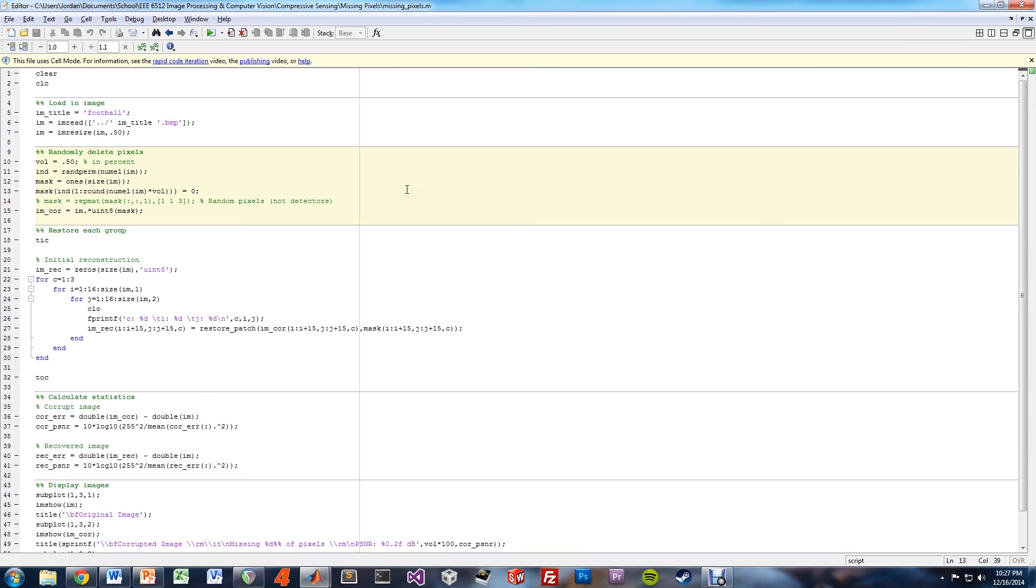So for example, with the way it's set up now, you might be deleting the red and green elements of one pixel, just the blue of another pixel, all three from another, none from another, any sort of combination. If you uncomment this line here, then it switches to deleting the red, green, blue elements of an entire pixel for the same volume.